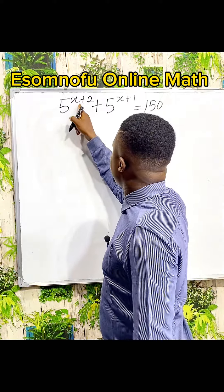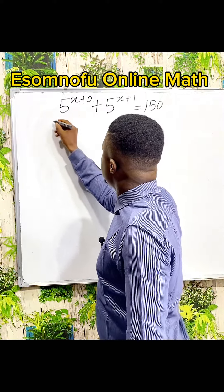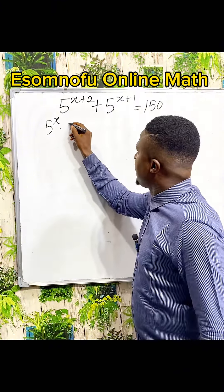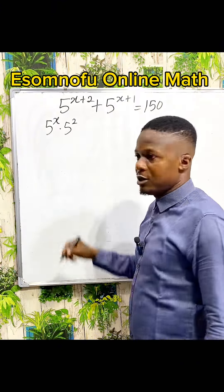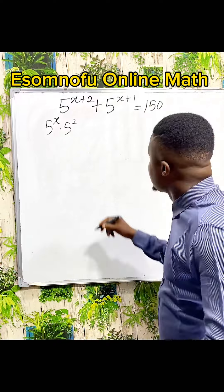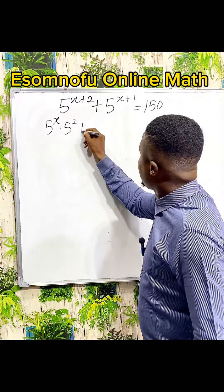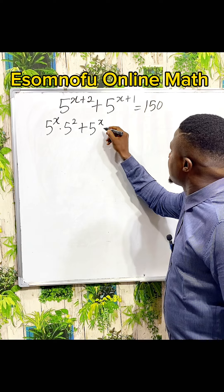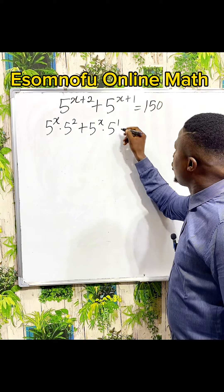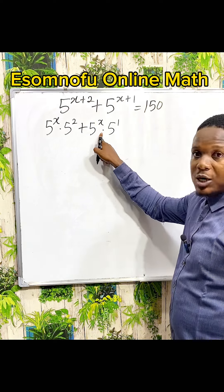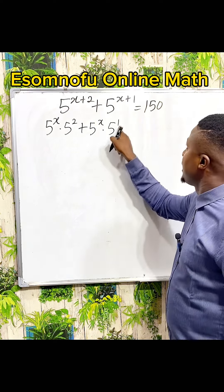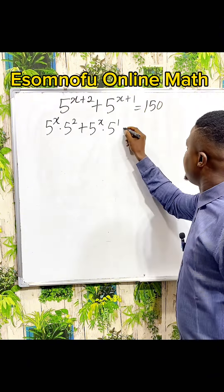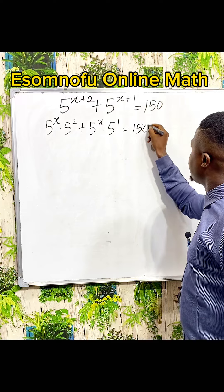Remember that 5 to the power of x plus 2 can be written as 5 to the power of x multiplied by 5 to the power of 2, from the laws of indices. Plus, 5 to the power of x plus 1 can be written as 5 to the power of x multiplied by 5 to the power of 1, because multiplication means you are adding the powers. Everything is equal to 150.